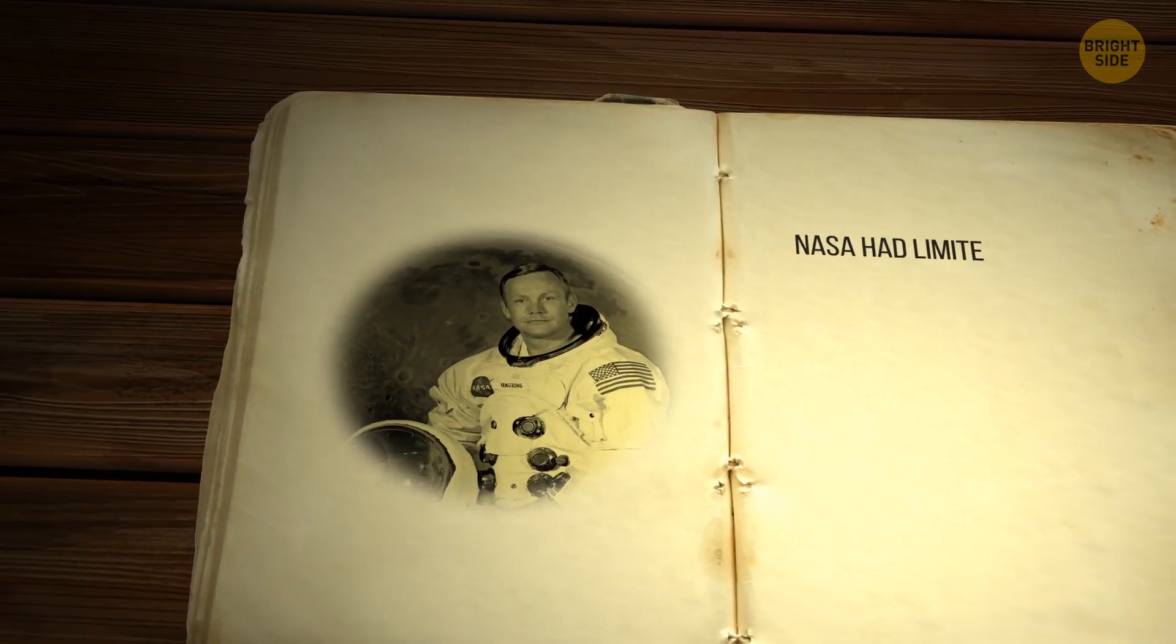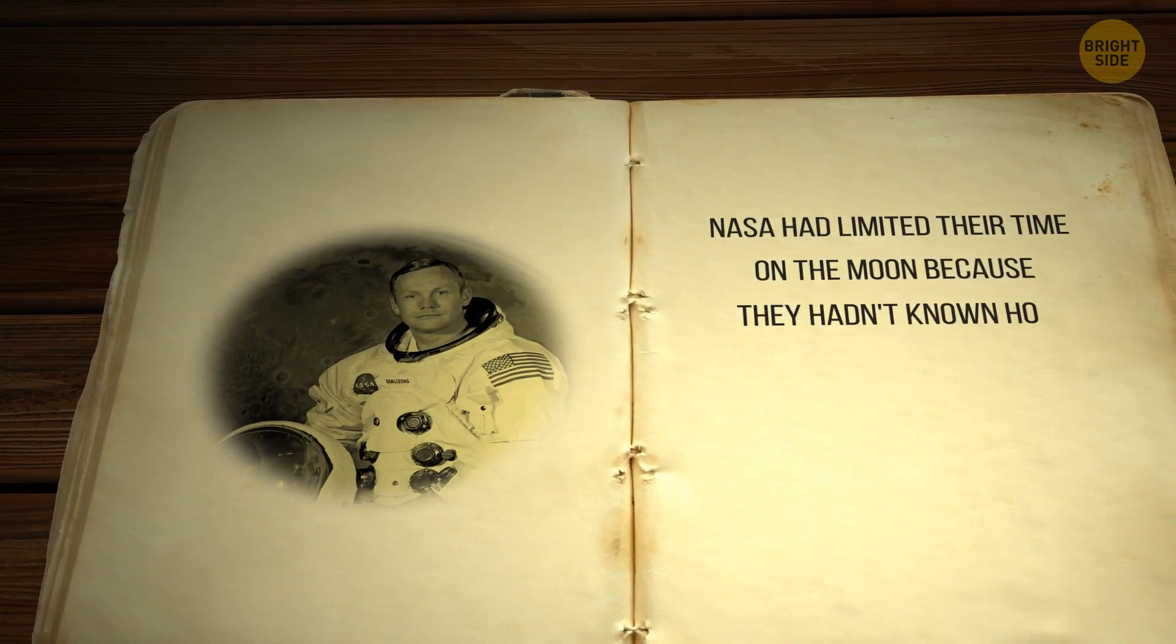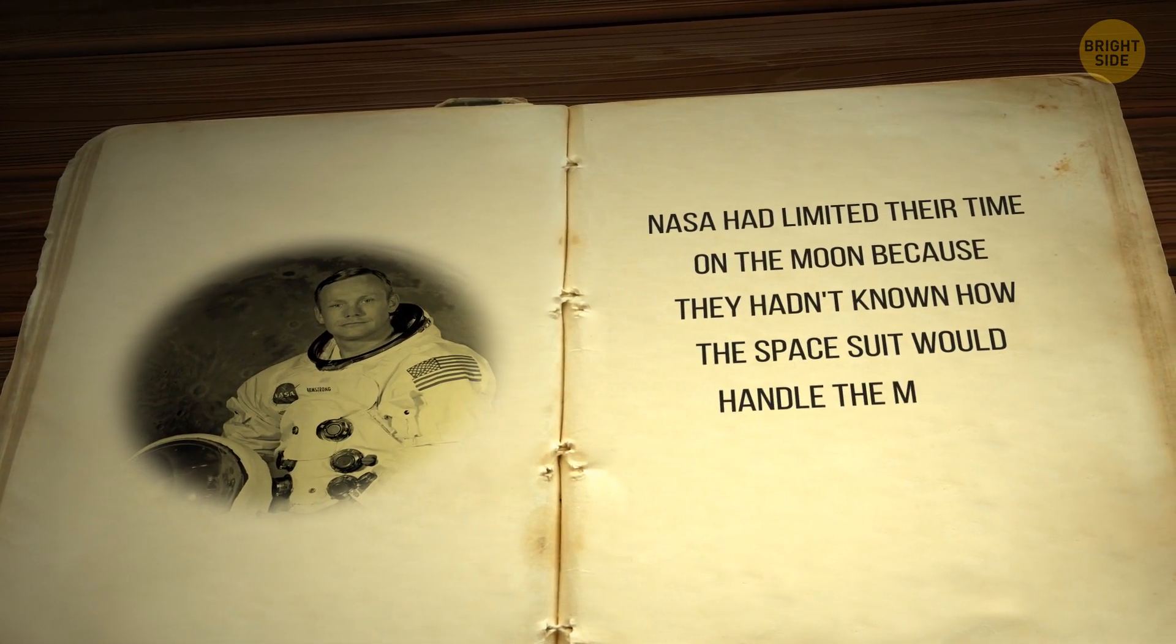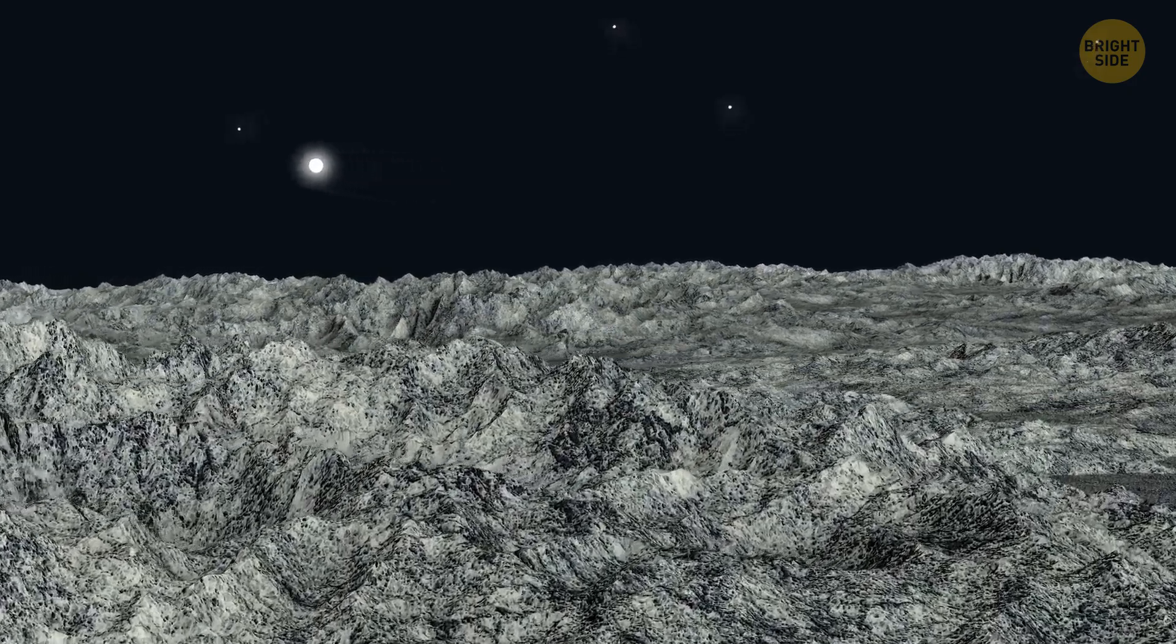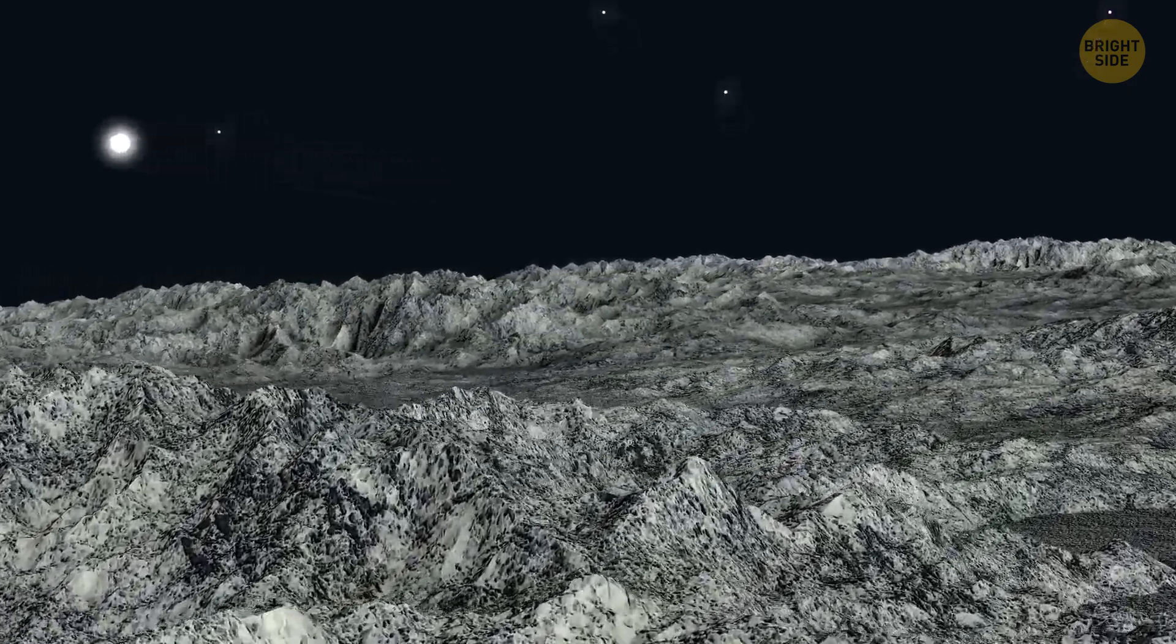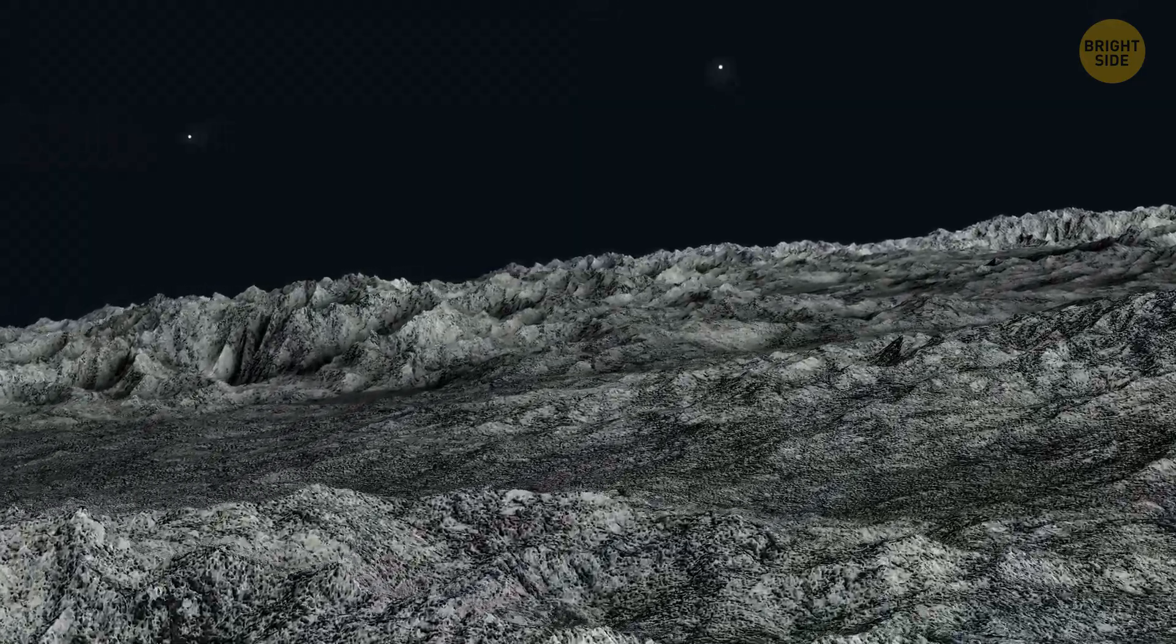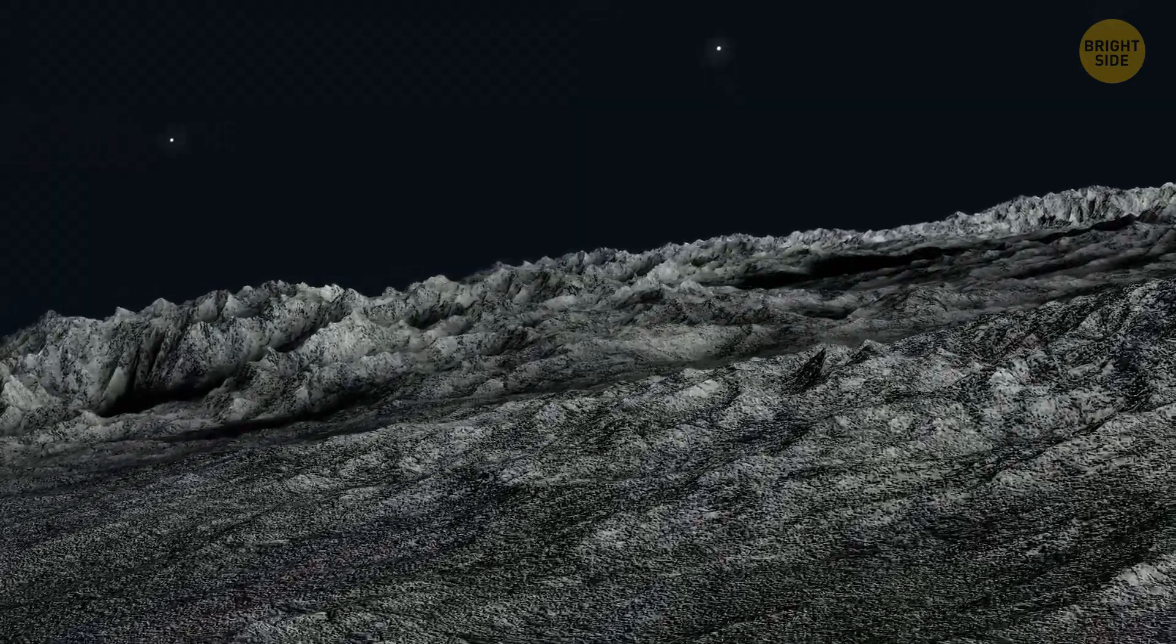Years later, Armstrong said that NASA had limited their time on the moon because they hadn't known how the spacesuits would handle the moon's extreme temperatures. They can be as high as 260 degrees Fahrenheit during the day and as low as 280 degrees Fahrenheit below zero at night.